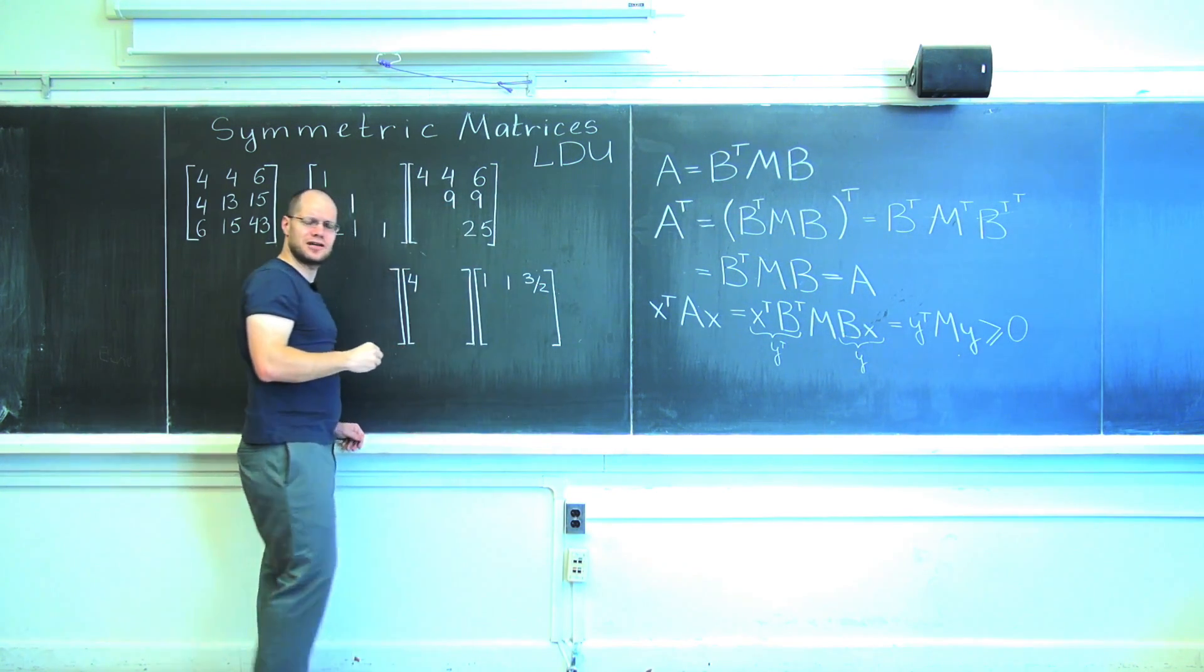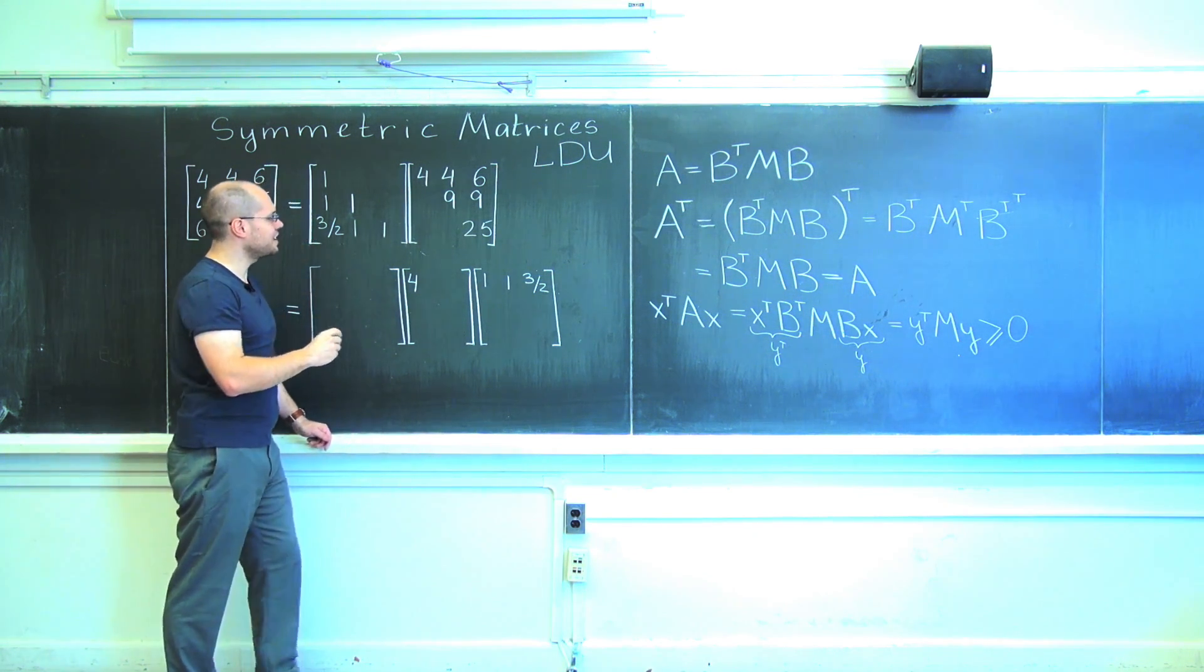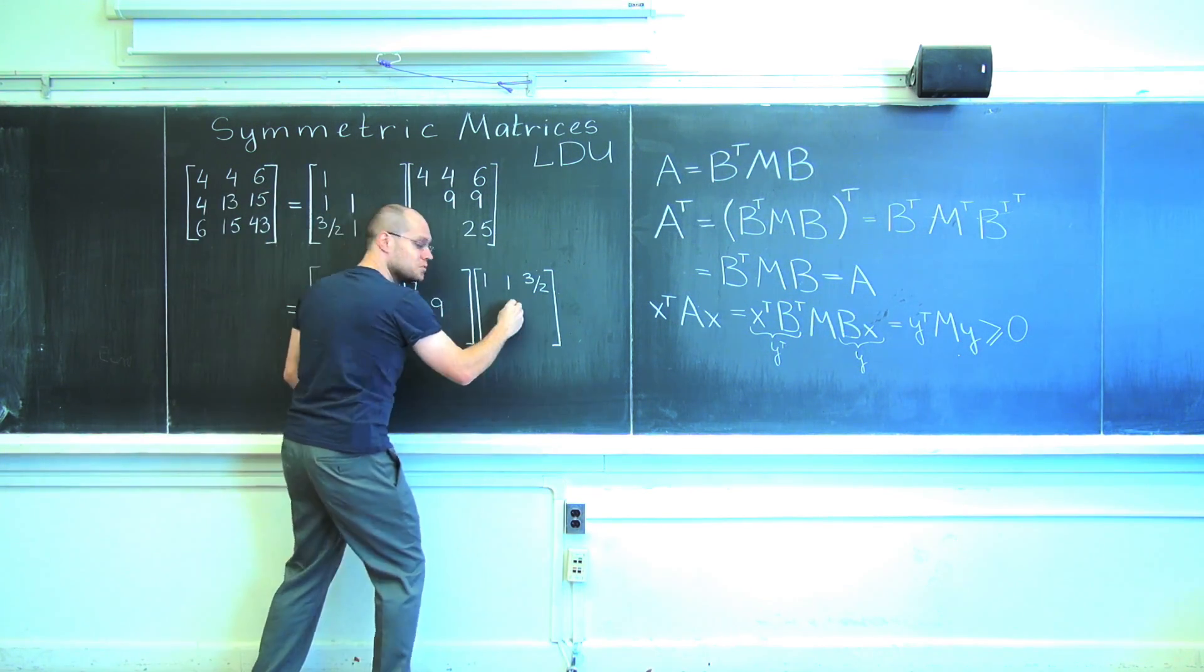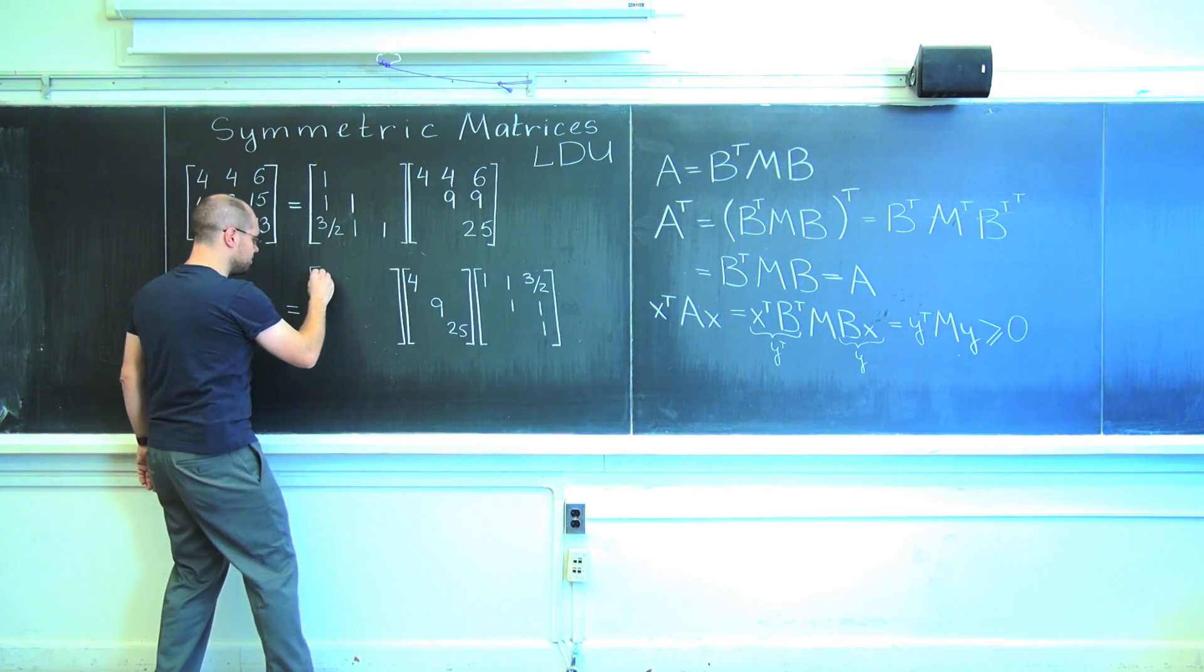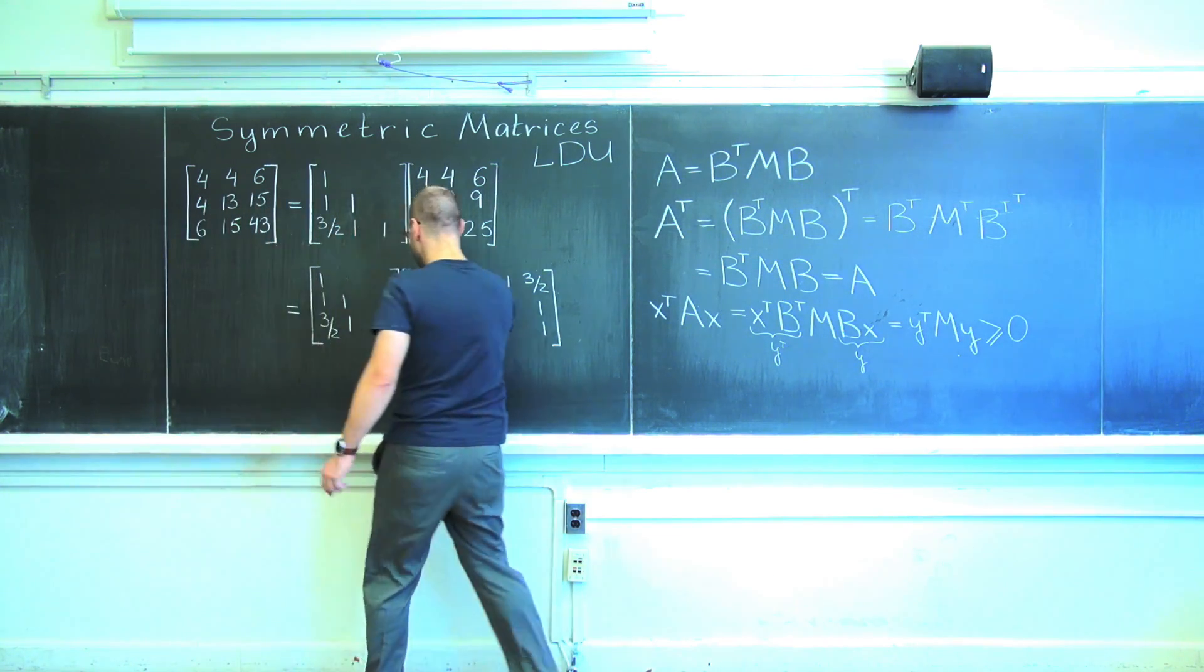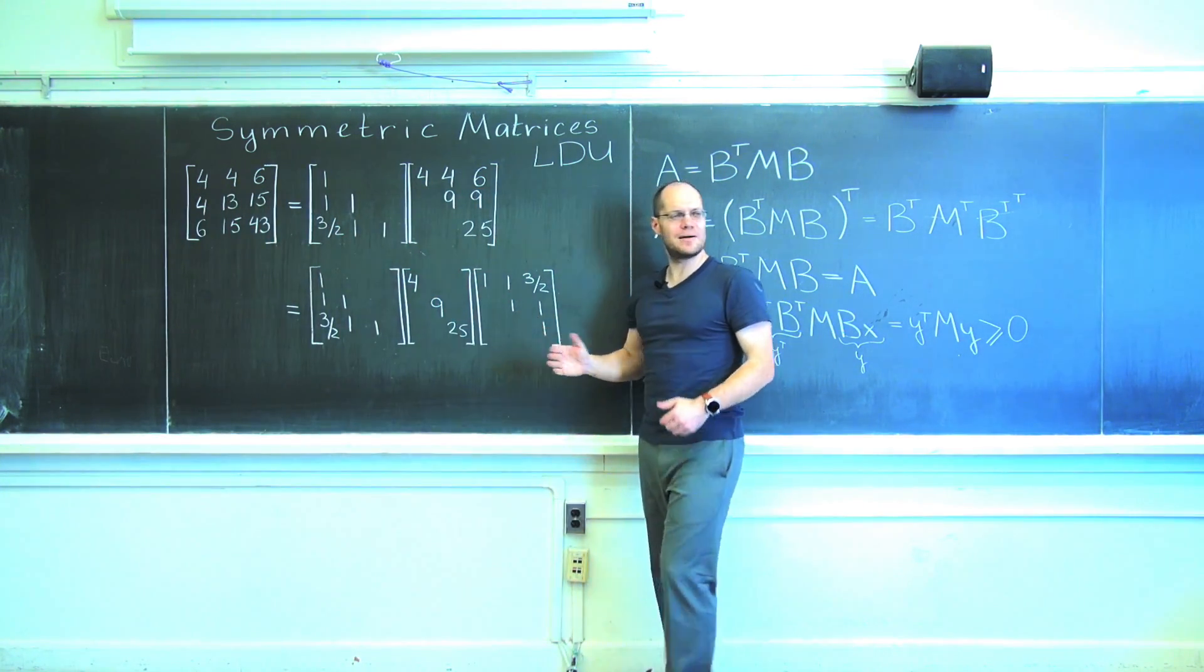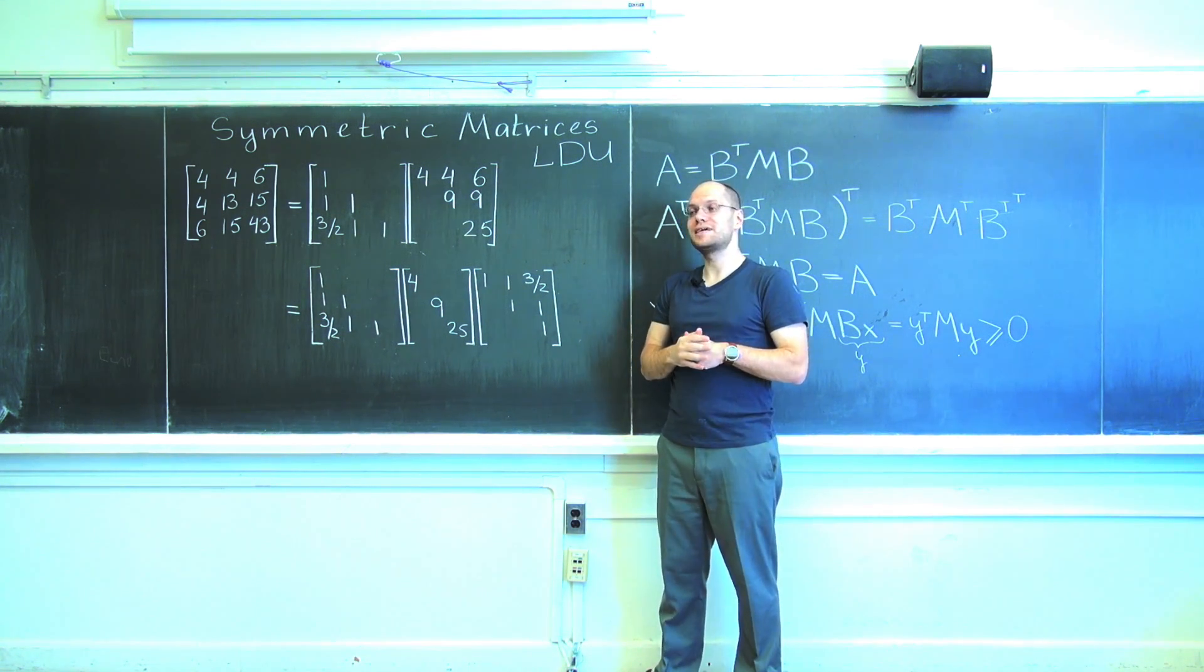Yeah I kind of saw it 3 halves before somewhere, didn't I? Right? Okay so the next one is 9 and the final one is of course 25. And let me copy the matrix L from above. Okay and this is the L D U decomposition.